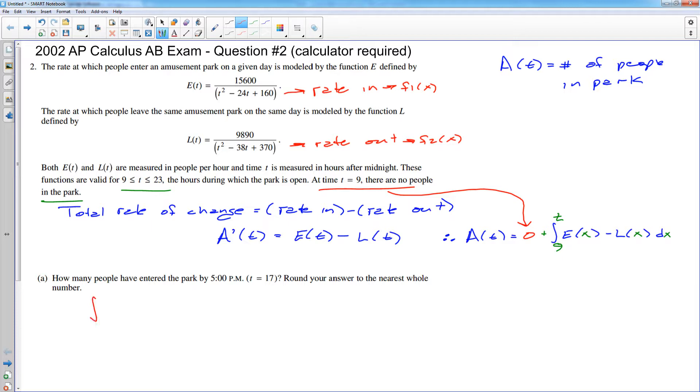Part A, we will do the area under the function E of T. And we will measure that. The park opens at 9. And they are extremely nice here because they could have just stopped with 5 p.m. and you figure T out on your own. But they were pretty nice. They told you that it is 9 to 17 of the function E of T. So I'll go to my calculator.